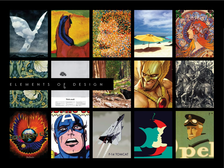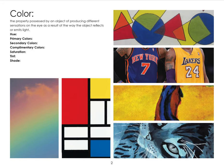Let's get into it. I do these in alphabetical order because there are seven terms and it makes them easier to remember. First: color — the property possessed by an object of producing different sensations on the eye as a result of the way the object reflects or emits light.